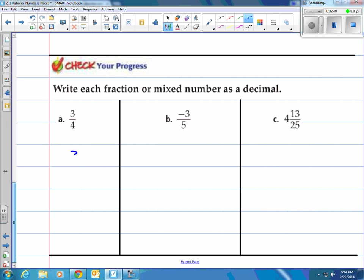3 fourths, what do we do? We take the top and divide it by the bottom. So how many 4s go into 3? None. Put our decimal, put a 0 here. How many 4s go into 30? That's going to be 7. It's 28. When you multiply it, you've got 2 here. Bring down a 0. 4 goes into 20, 5 exactly. And there you are. It's 0.75.